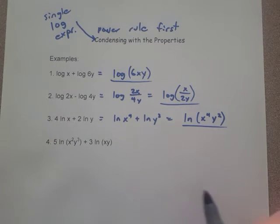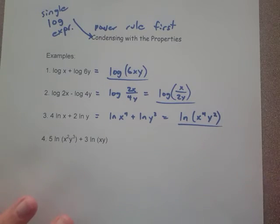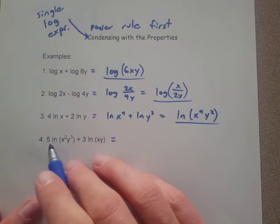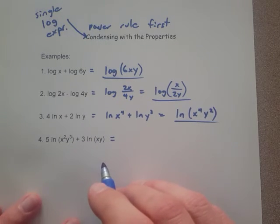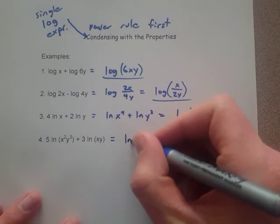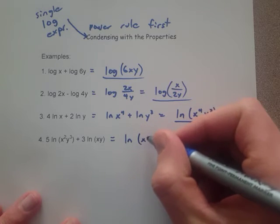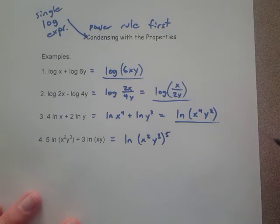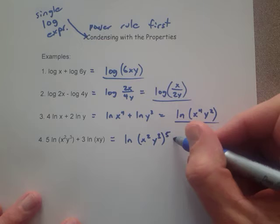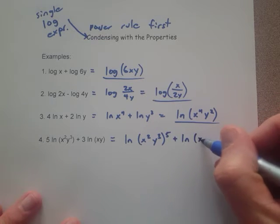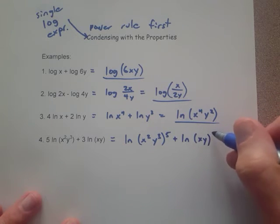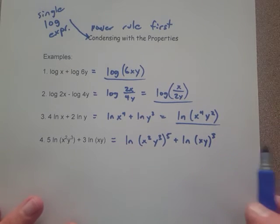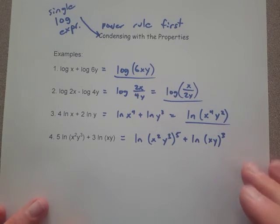Number 4, as last time, the most complicated of the examples. We're going to see if we can condense this. Again, first of all, we're going to put the exponents up here. We're going to use the power rule first. So that means I'm going to change this to ln of x squared y cubed, raise that to the 5th power, and then we have ln of xy to the 3rd. Make sure you put these outside of the parentheses for now because we're going to have to distribute those in.